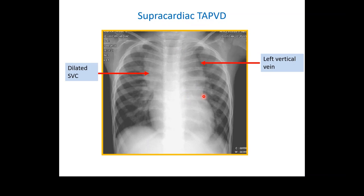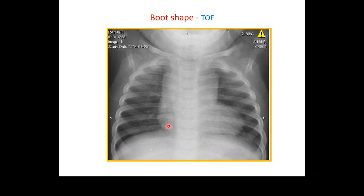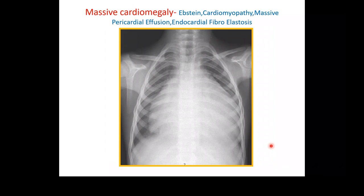A boot-shaped heart on chest X-ray with oligemic lung fields is typical of tetralogy of Fallot, because there is reduced pulmonary blood flow due to pulmonary stenosis.